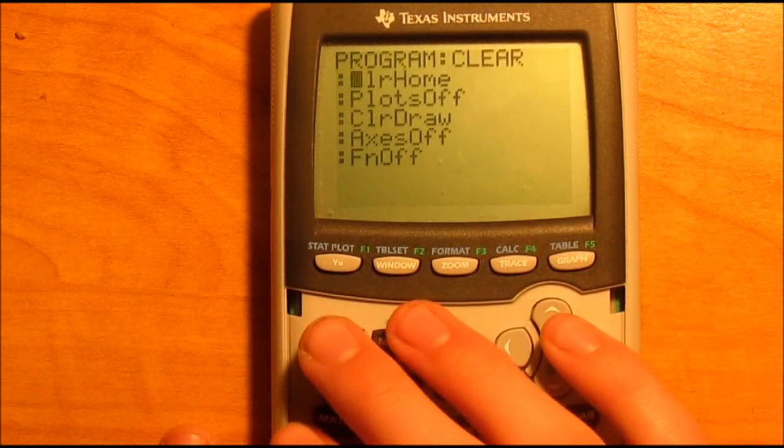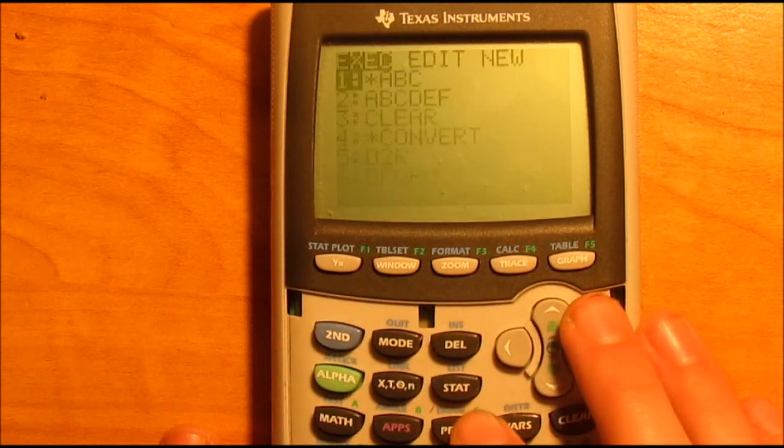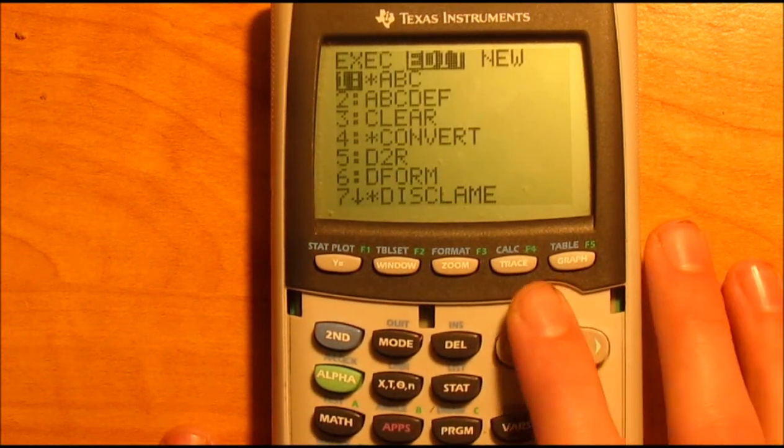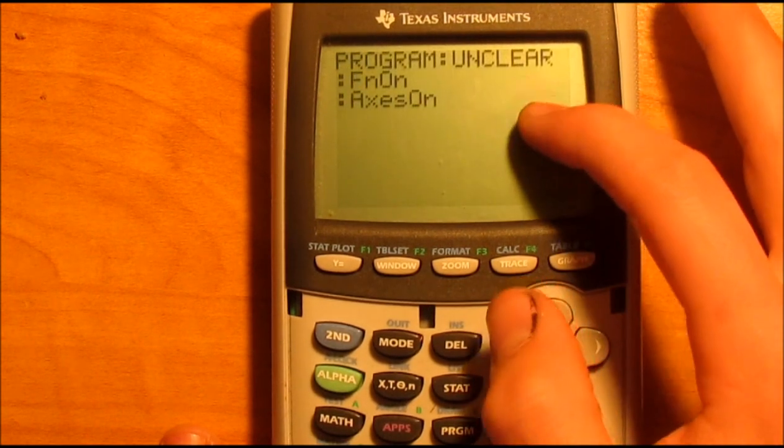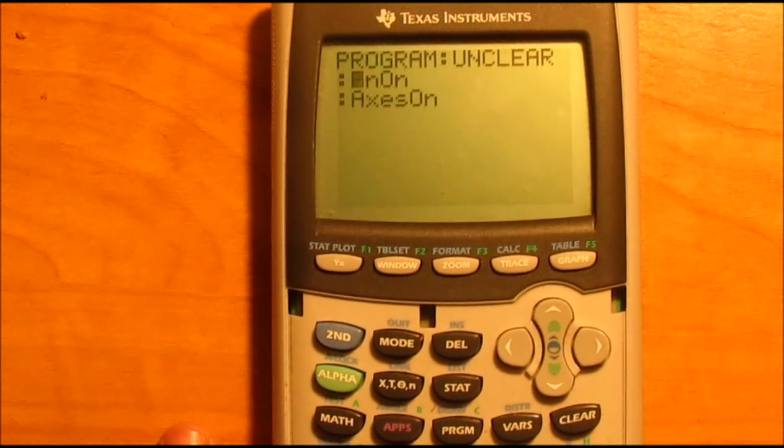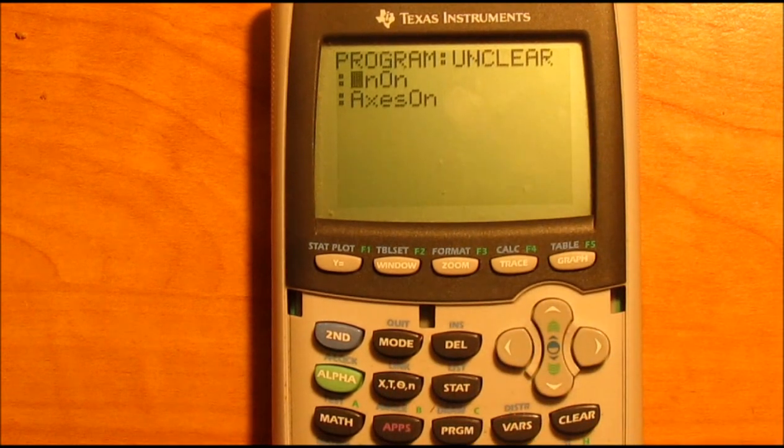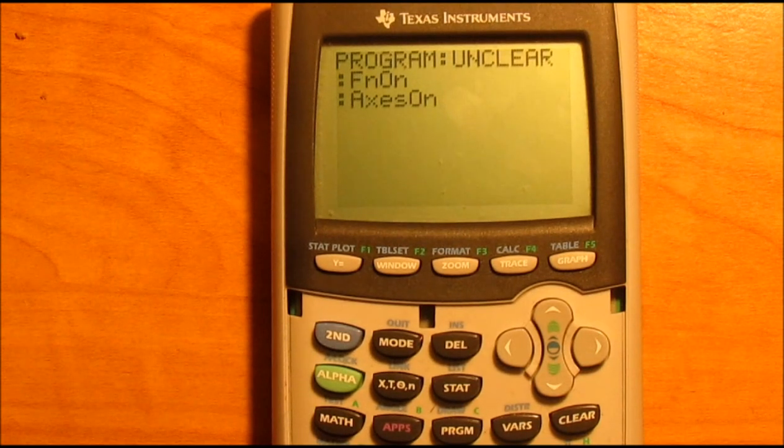All right, next we're going to do the Unclear. This one's even simpler. This one only has two: FN Off and Axes Off, or FN On and Axes On. So go ahead and you can find those in the catalog as well.